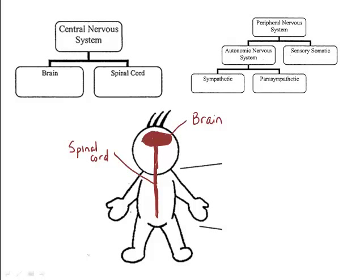The peripheral nervous system is composed of nerves carrying sensory messages to the central nervous system and motor commands from the central nervous system. Peripheral nerves are seen as branches off of the central nervous system. The peripheral nervous system is further subdivided into the autonomic nervous system and the somatic nervous system.